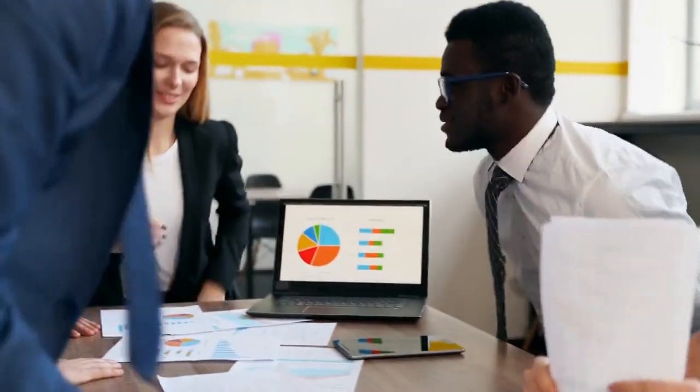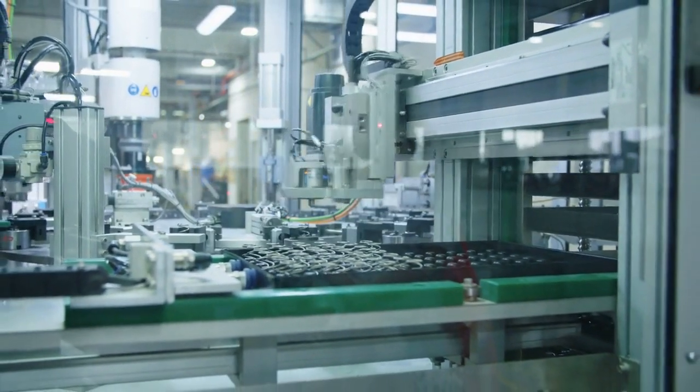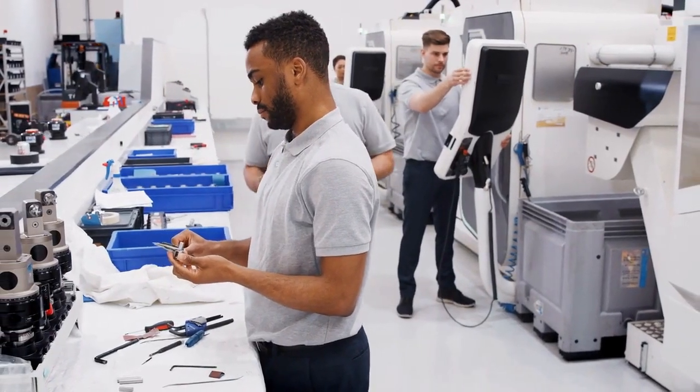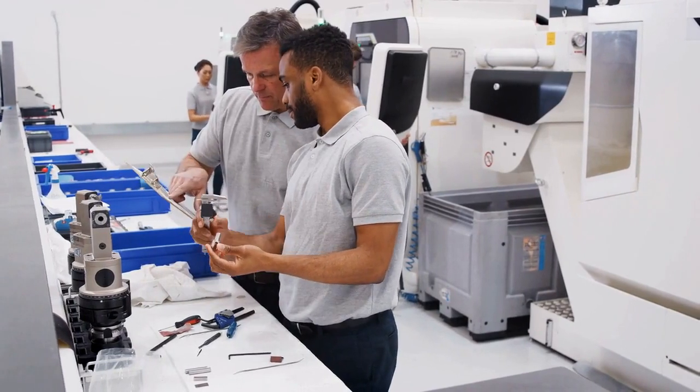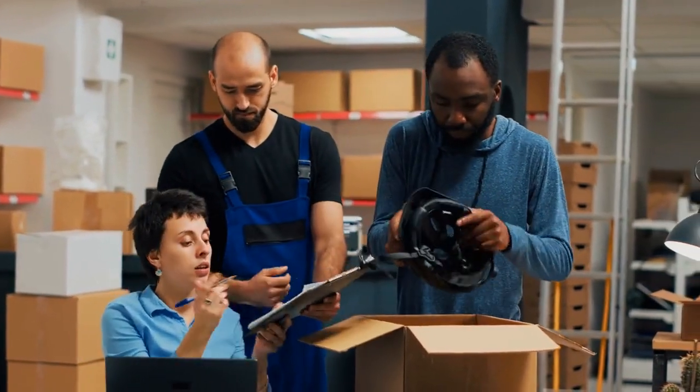In conclusion, the manufacturing process of Casio calculators is a fascinating and intricate process that involves skilled designers, craftsmen, and technicians working together to create a product that is both reliable and innovative. From the design phase to the final assembly, every step of the process is carefully planned and executed to ensure the highest level of quality. Casio's commitment to excellence is evident in every aspect of their manufacturing process, from the selection of the highest quality materials to the rigorous testing and quality control procedures. Even after the calculators have been manufactured and packaged, Casio takes great care to ensure that they are shipped safely and securely to their customers all around the world.